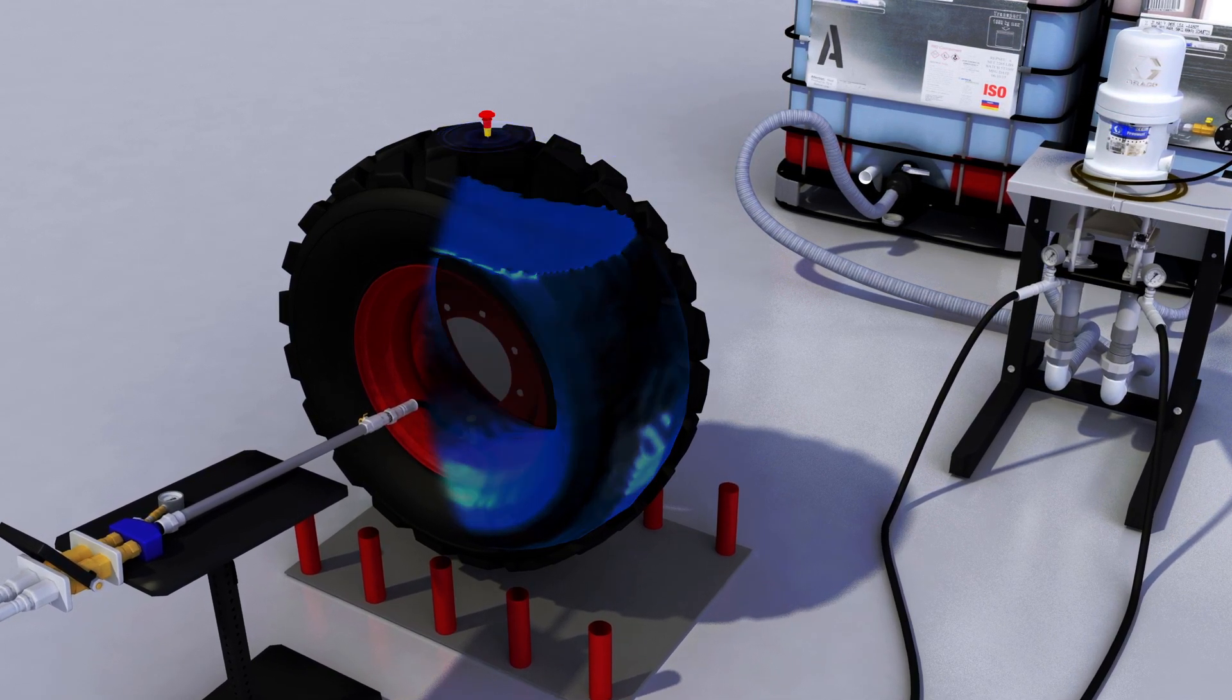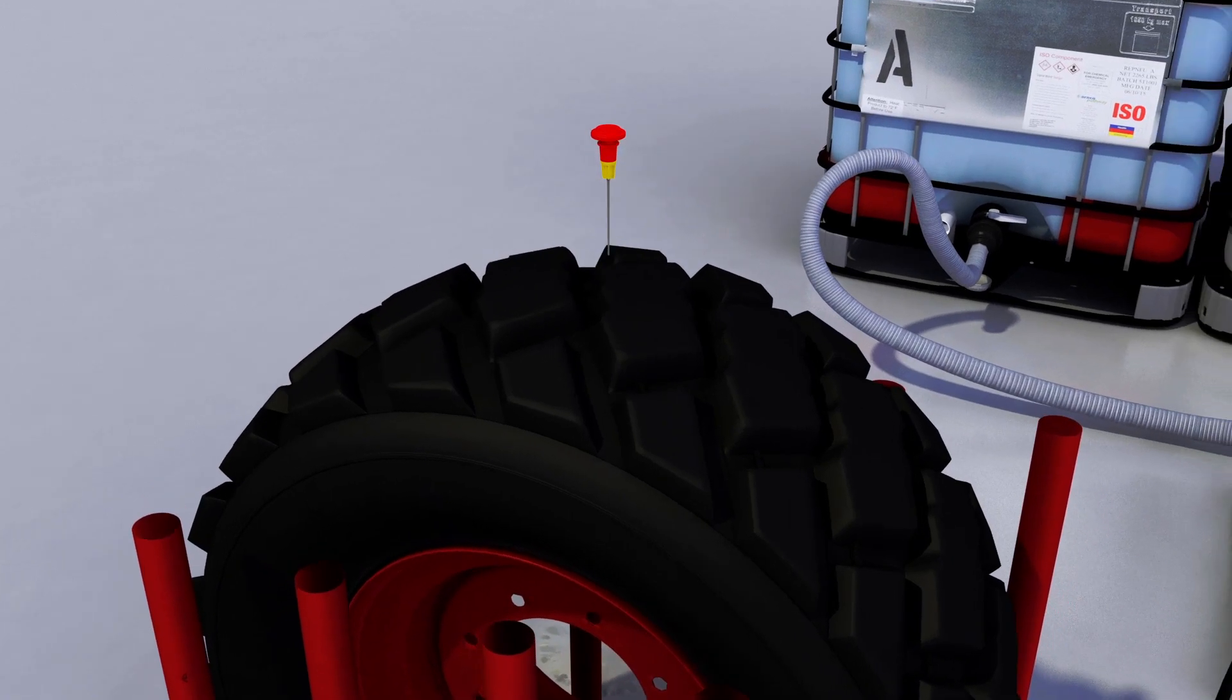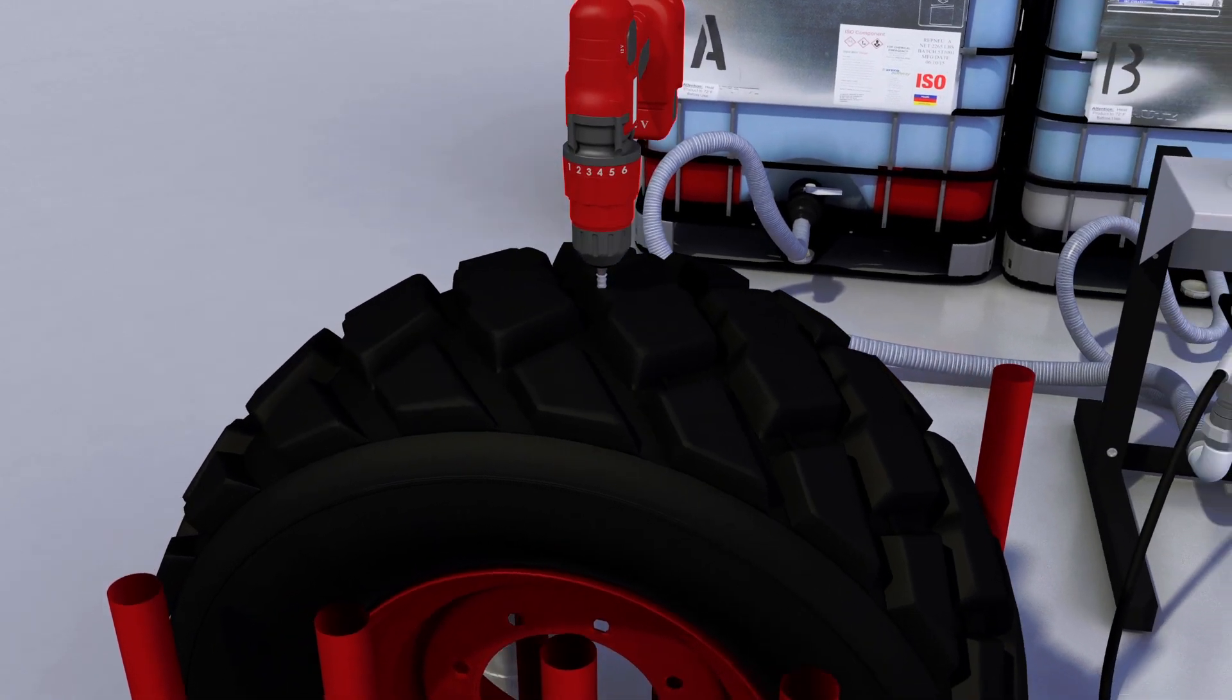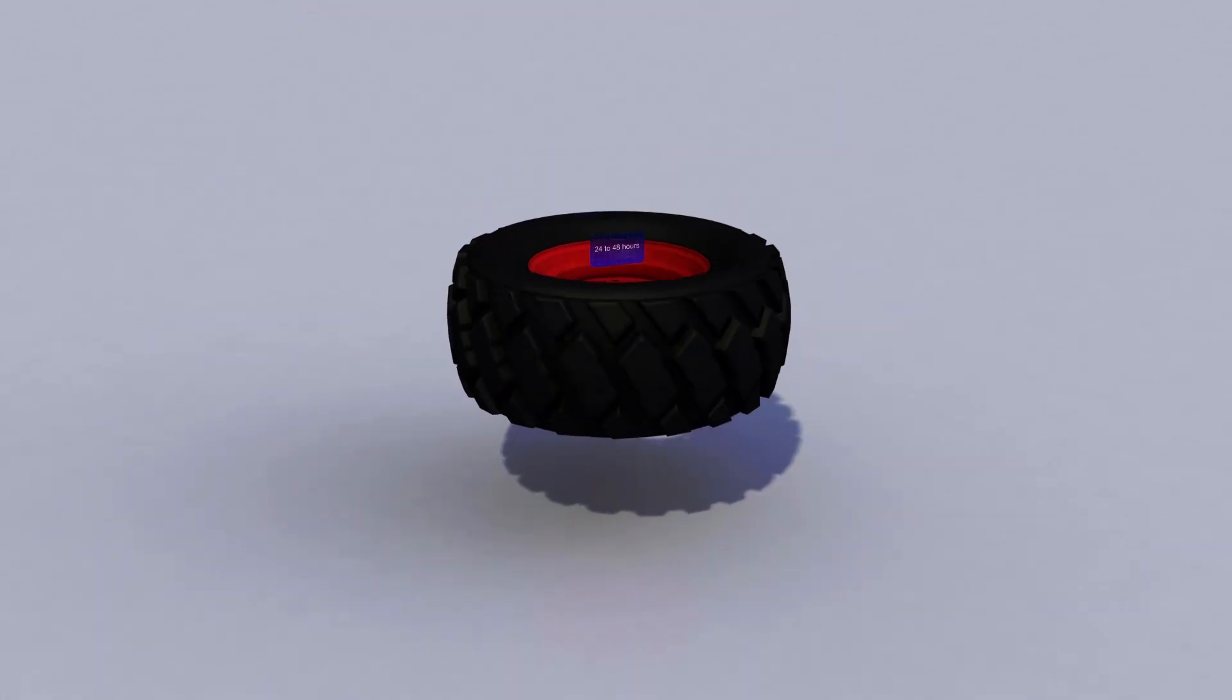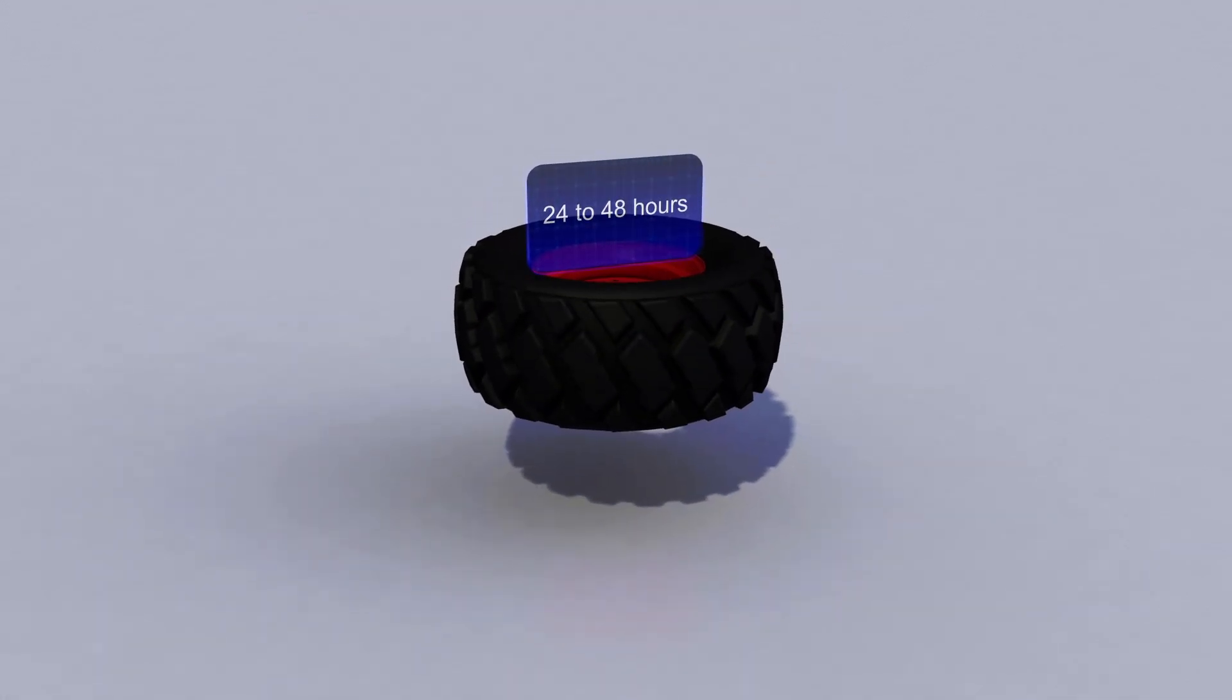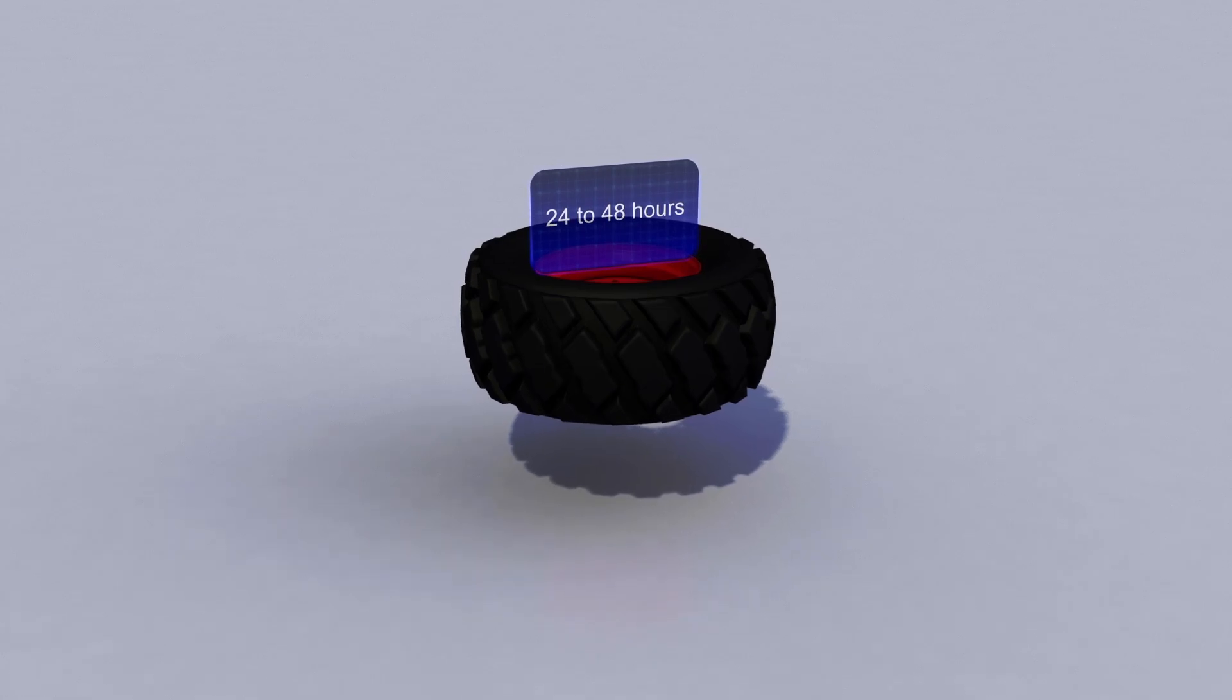After the tire is full, the needle is removed and the hole is plugged with a nail or sheet metal screw. The tire is then removed from the tire cage and laid flat for 24 to 48 hours to cure.